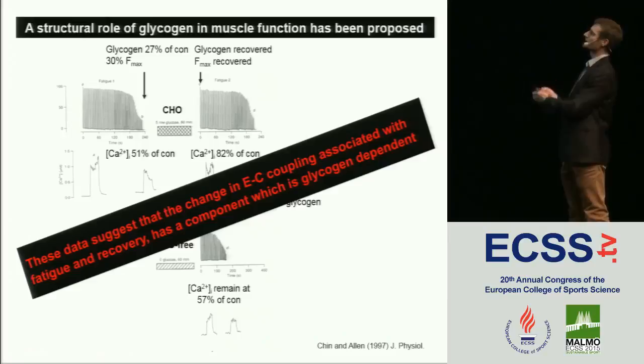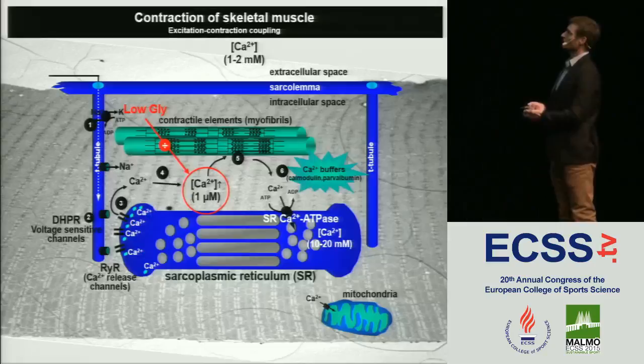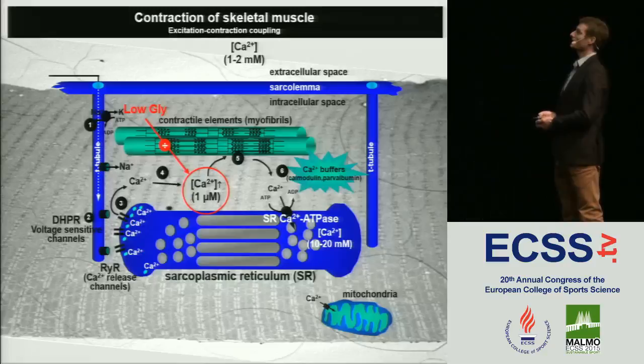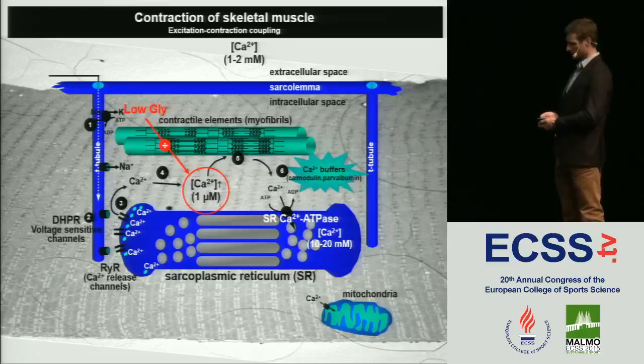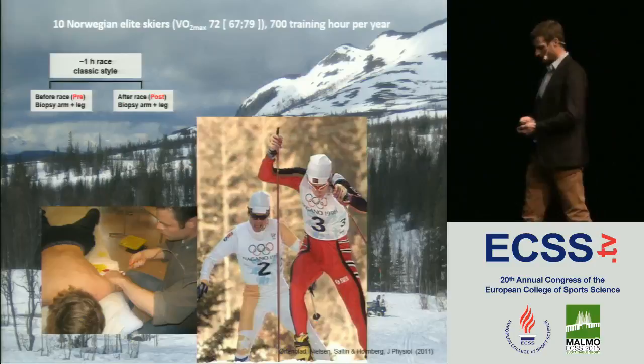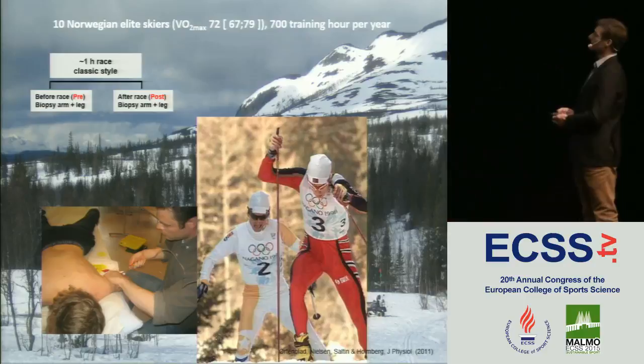In a control experiment, fibers were recovered in glucose-free solution. Glycogen remained low, and maximum force and intracellular calcium also remained reduced. These data show that changes in EC coupling associated with fatigue have a component that is glycogen-dependent. Going back to the EC coupling figure, we can say that with low glycogen, tetanic calcium levels are decreased. This has been shown quite a few times since then. The question is: how does low glycogen actually affect tetanic calcium levels? We did some studies on Norwegian elite skiers, taking biopsies from arm and leg before and after about a one-hour race.